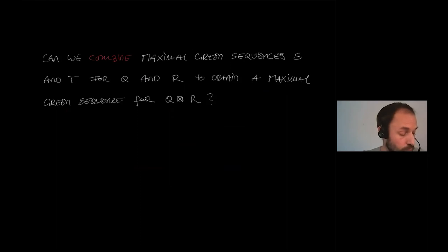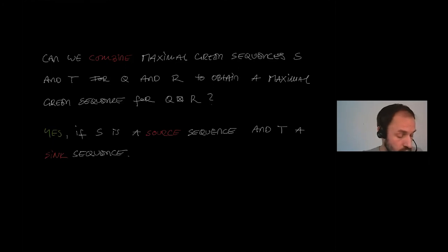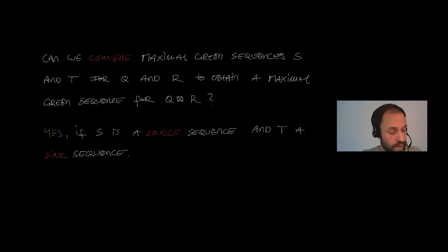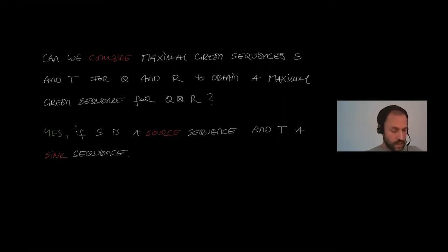The question which arises is whether we can combine maximal green sequences for individual quivers to obtain a maximal green sequence for this product. The answer is yes, if S is a source sequence and T is a sink sequence. Specifically, if S is a maximal green sequence of the first quiver consisting only of sources at the time of mutation, and T is a sink maximal green sequence of the second quiver, then we can combine them to obtain a maximal green sequence for the triangle product Q ⊠ R.